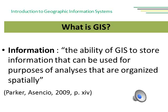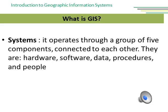The I in GIS stands for information. For Parker and Asensio, GIS has the ability to store information to be used for purposes of analysis that are organized spatially. The S in GIS stands for systems. GIS operates through a group of five components connected to each other: the hardware, the software, data, procedures, and people.